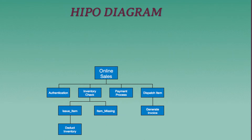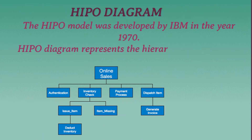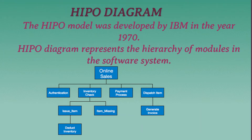The HIPO model was developed by IBM in the year 1970. The HIPO diagram represents the hierarchy of modules in the software system.